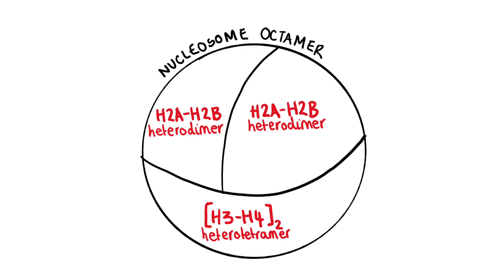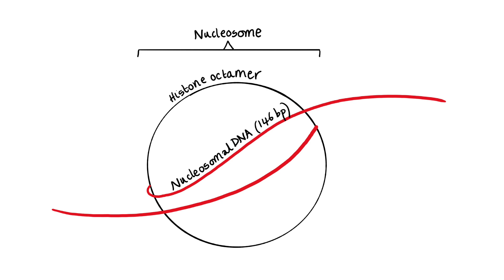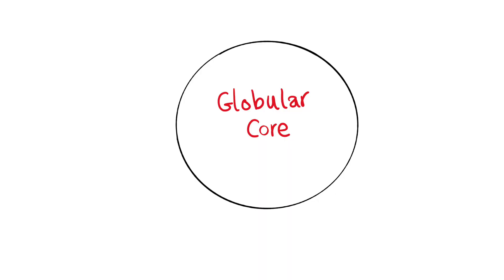Putting those three parts together — one heterotetramer and two heterodimers — we form an eight-subunit nucleosome core, which is what DNA wraps around so we can condense chromatin into the nucleus. Around one nucleosome we have 146 base pairs of DNA, wrapping around roughly 1.75 times. So a nucleosome is this octamer of histone proteins with DNA wrapped around it.